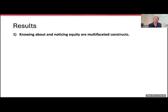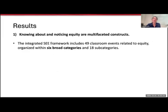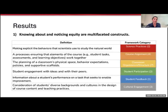The first thing we found is that knowing about and noticing equity are multifaceted constructs. The integrated C framework we developed includes 49 classroom events related to equity organized within six broad categories and 18 subcategories. These are the six broad framework categories emphasized from the deeper literature: science practices, course alignment, classroom organization and structure, student participation, student feedback, and cultural engagement.